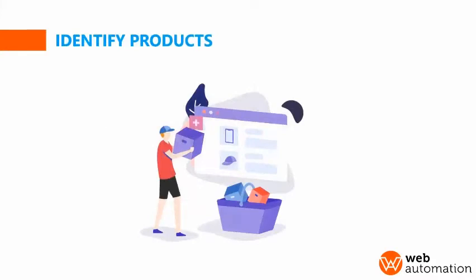Then you need to find your products. Once you've picked the niche, you need to find all the different websites or companies that sell that product and would allow you to promote it on their behalf. For example, if we were to start a laptop comparison site, we would need to find all the retailers, brands, and manufacturers that sell laptops, and then understand if these brands will pay us a commission for promoting their products.